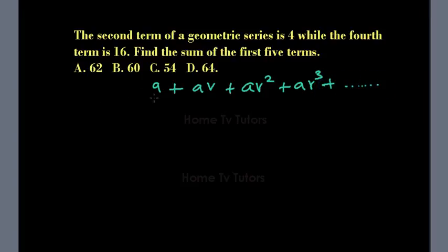So for us to know the value of a and r, we go by this. The second term, which is ar, we're told is 4. Let that be equation 1. And for the fourth term, which is ar³, equals 16. Let that be equation 2.